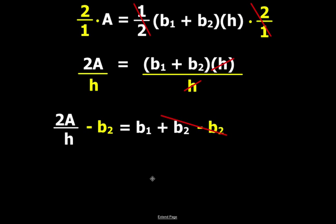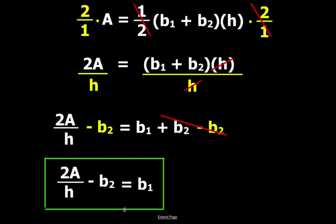Once base two cancels out, we're going to get base one is the quotient of 2A and h minus base two.